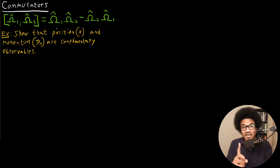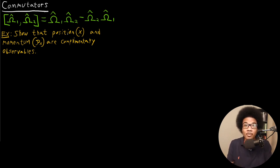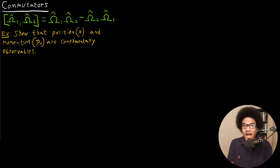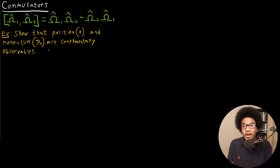So if that's the case, then position and momentum should be complementary observables, since those were the first two properties we introduced in the Heisenberg uncertainty principle. So that's what I want to do in this video — show explicitly that position and momentum are complementary observables by evaluating their commutator. To show that, we will evaluate the commutator.